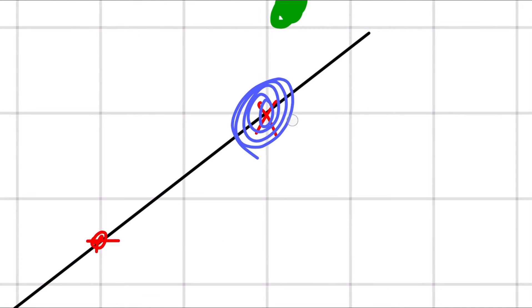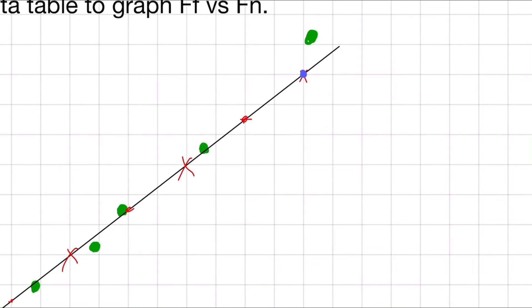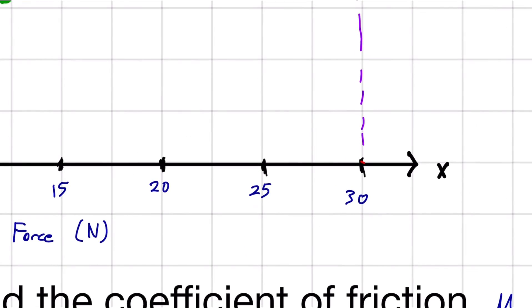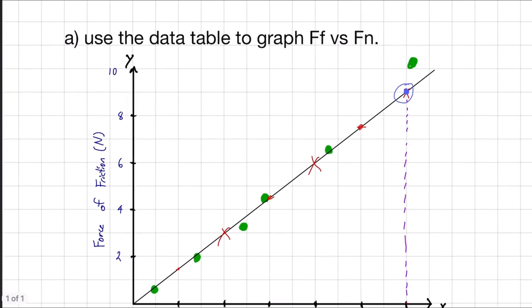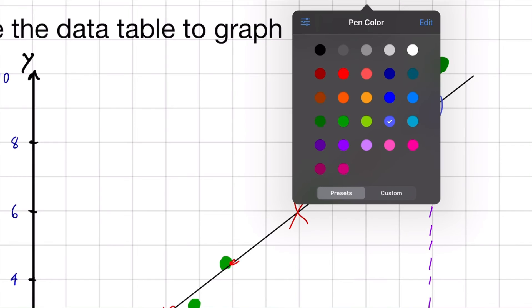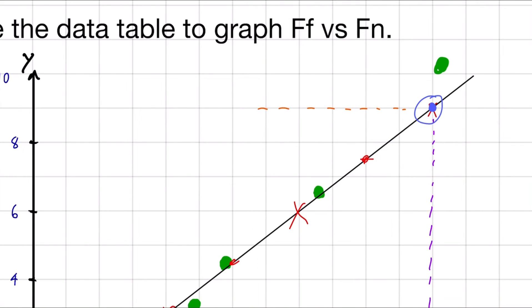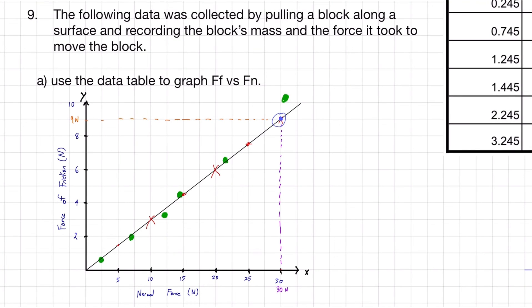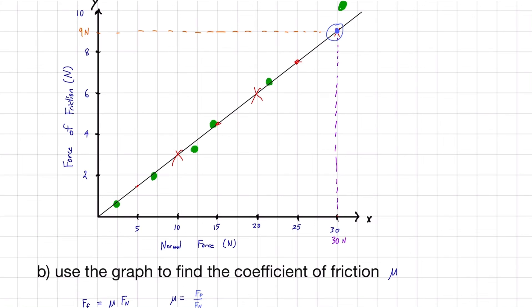I'm going to do this in purple to show you. When we pick this point here and we follow it down, the normal force is 30 newtons. And when we follow it across, the force of friction is 9 newtons. So here we have two numbers that we're going to be able to use to calculate mu.